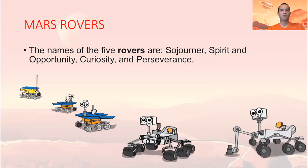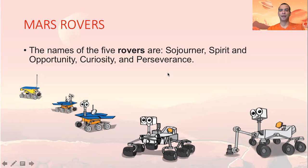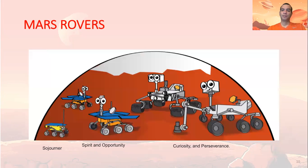We will review each one, one by one. The names of the five rovers are Sojourner, Spirit, Opportunity, Curiosity, and the last one is called Perseverance. In this picture, you can see the size of each rover.